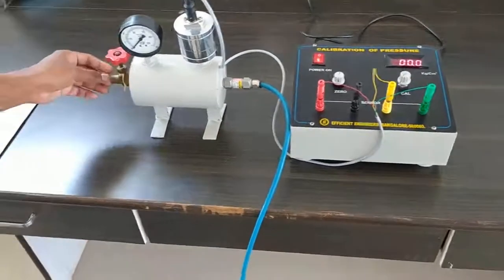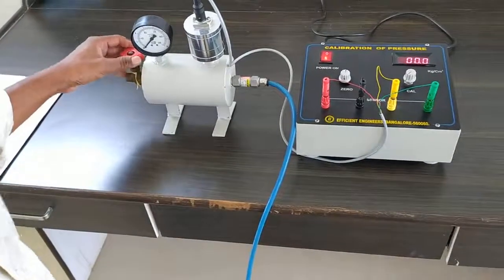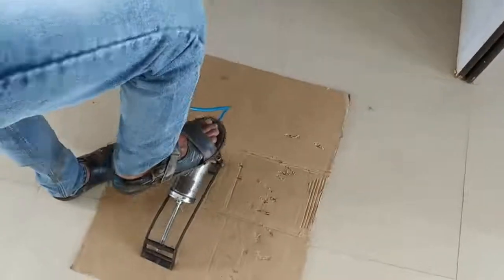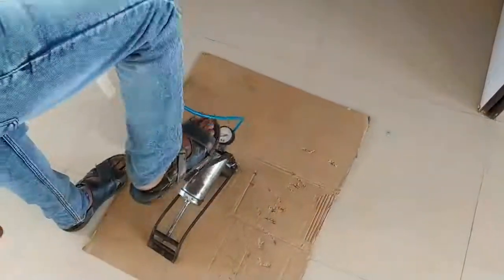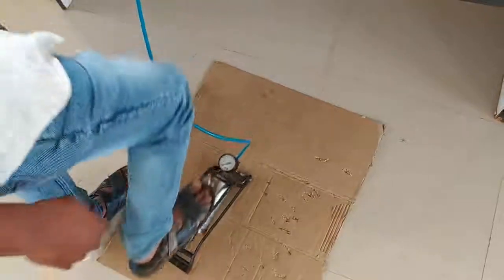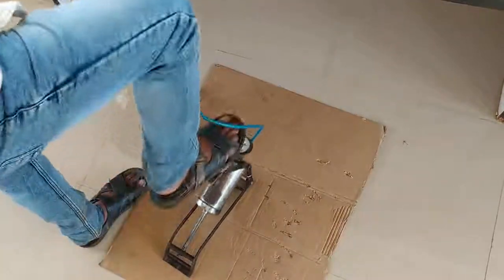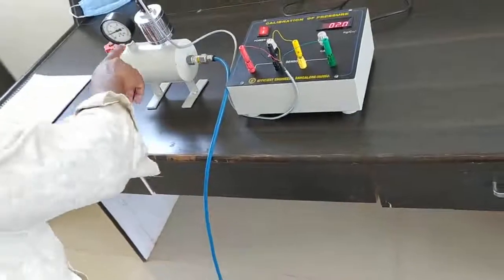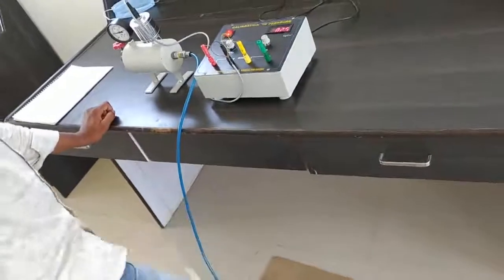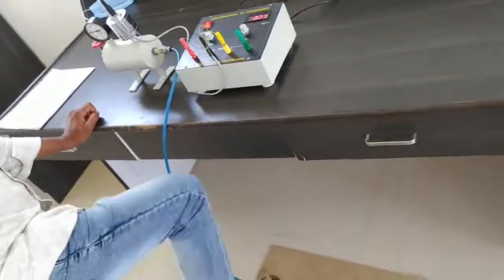After that, we have to close this valve and we have to start pumping. We have to pump for a maximum of 3 kilopascal and we have to check the reading. This shows in the dial indicator that we have to match with the pressure cell. We are pumping this pump.